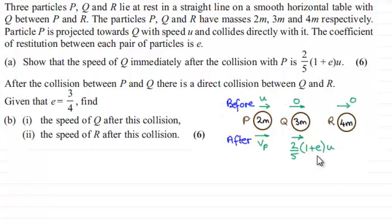And now we're told that after the collision between P and Q, there is a direct collision between Q and R. Given that the coefficient of friction E equals 3/4, we have to find the speed of Q after this collision and the speed of R after this collision. So if you'd like to have a go at this, I'll just give you a moment to pause the video and when you come back you can check your solution against mine.